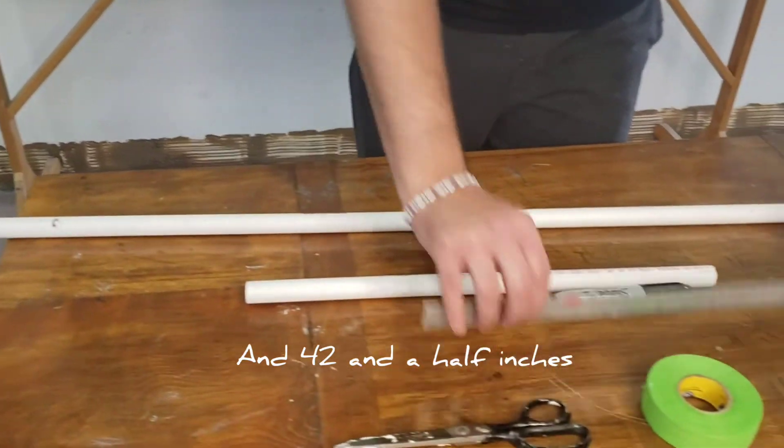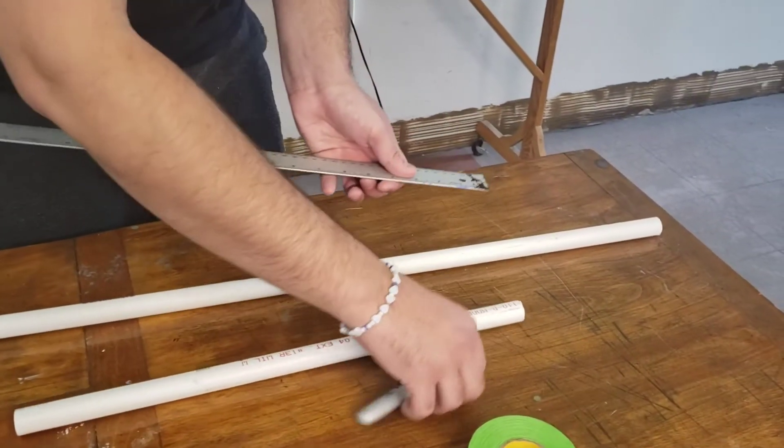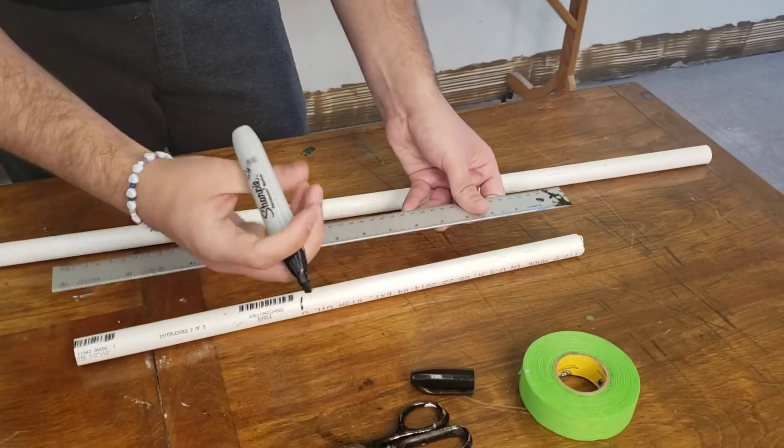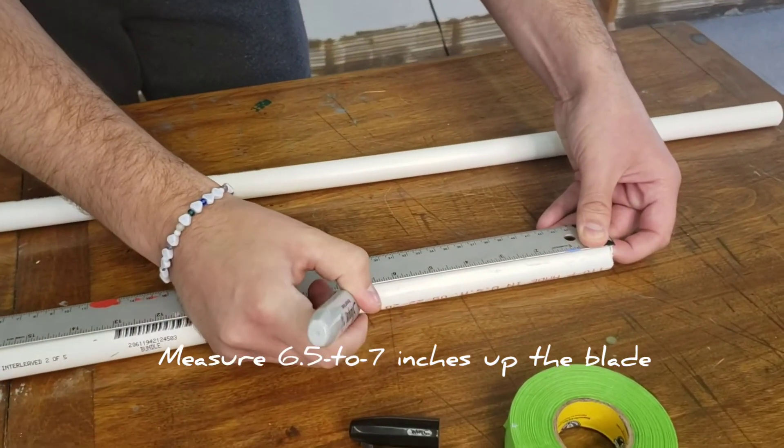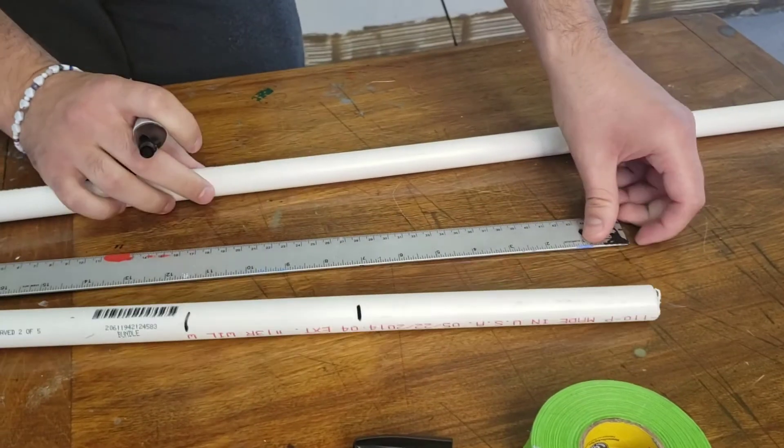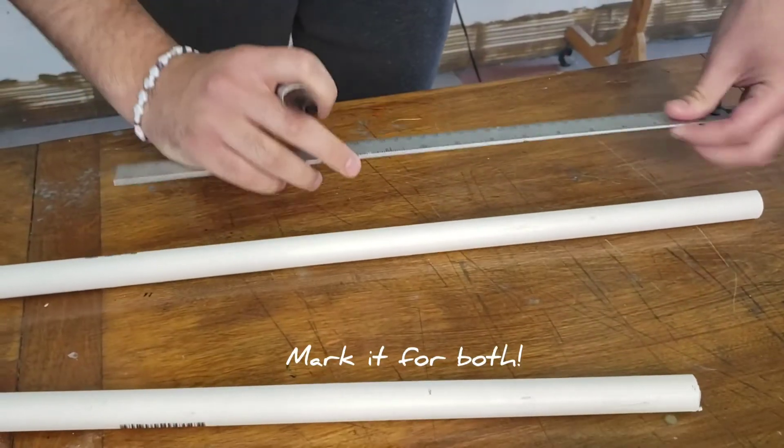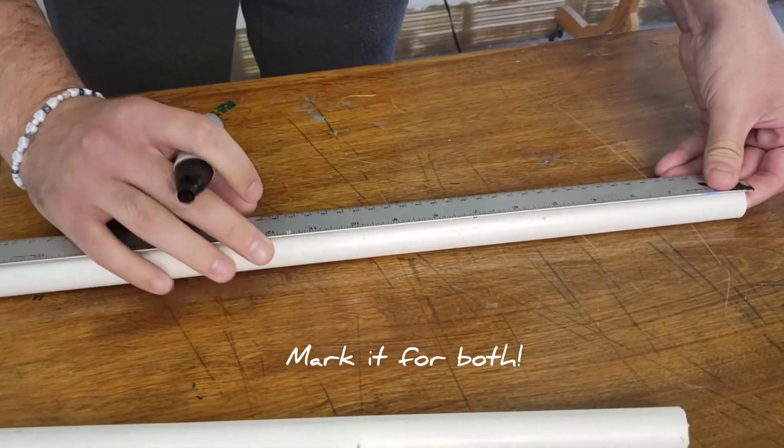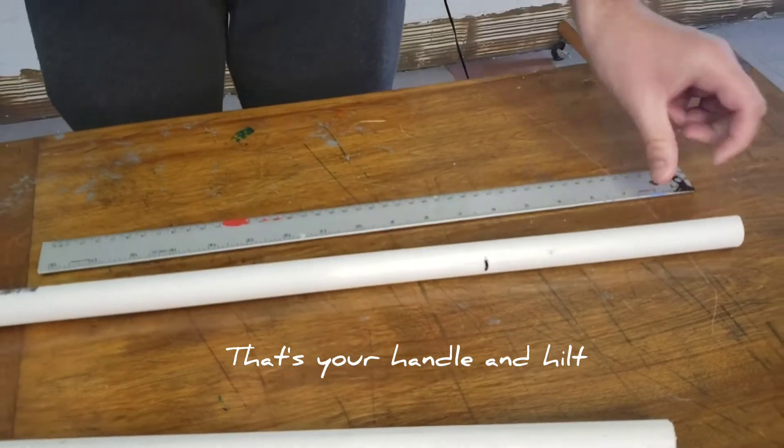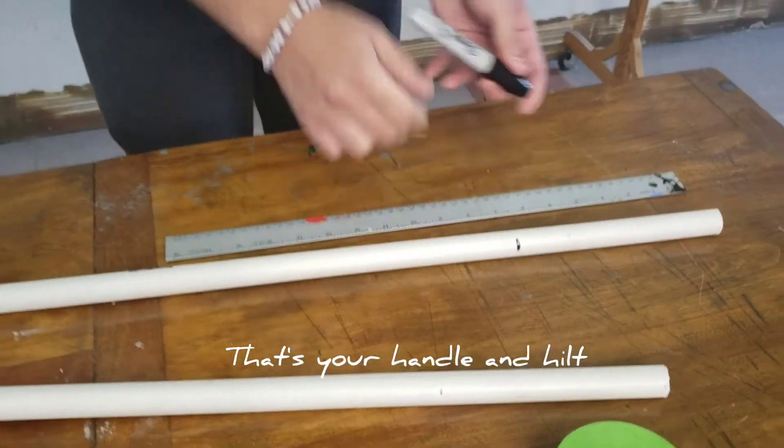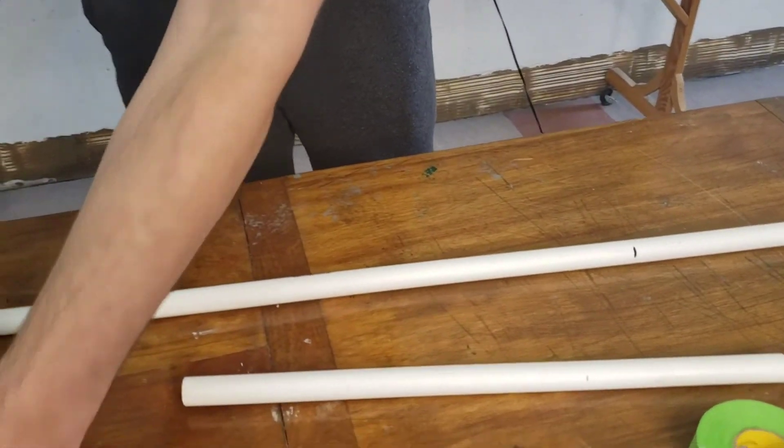At this point we will take our ruler and our sharpie, and measure about 6 and a half to 7 inches up the blade and make our mark, and then do the same on our longer length. And this is going to be the handle and hilt of your sword. Now, once we have that all measured out, we can move all this off to the side.